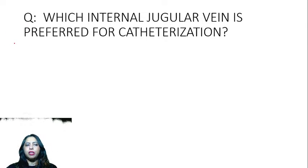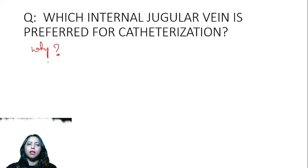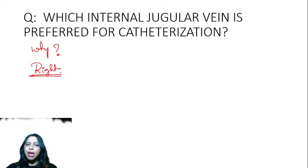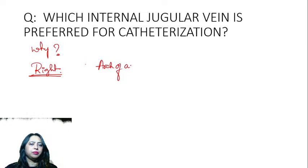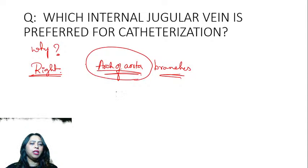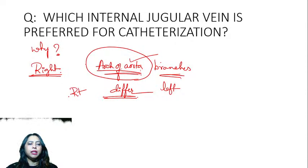Which internal jugular vein is preferred for catheterization? The right side is preferred. This is because the skin is thinner on the right side, and also because the relations differ on the right and left side due to the arch of the aorta. The right side has fewer overlying structures and is freer than the left side.